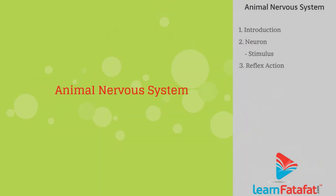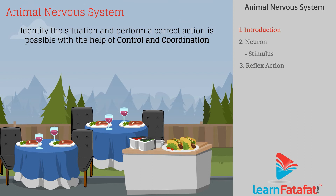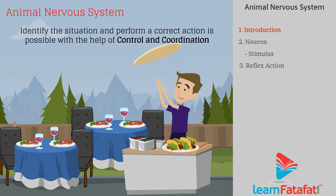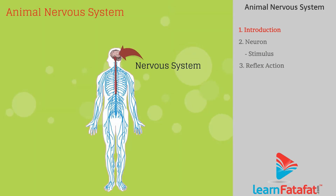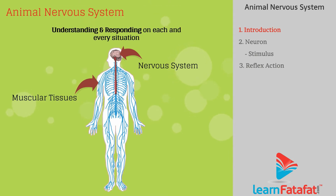Animal Nervous System Part 1. Identifying a situation and performing a correct action is possible with the help of control and coordination. The nervous system and muscular tissues help in understanding and responding to each and every situation.